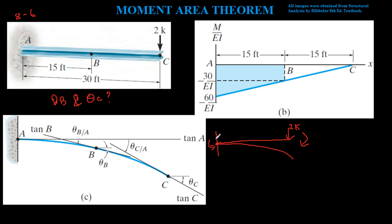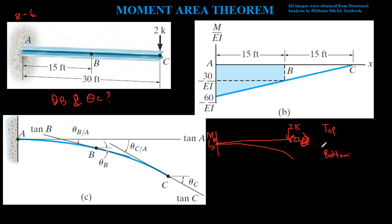We have X and Y reactions at the fixed support, but we're not concerned about those at the moment. What is the moment at 15 feet? There is no moment at the free end where the force is applied, but there is moment along the beam — so there's zero moment at the free end and 60 k·ft at the fixed support.